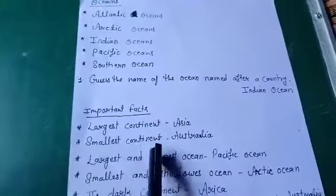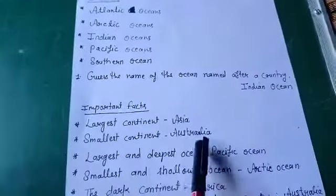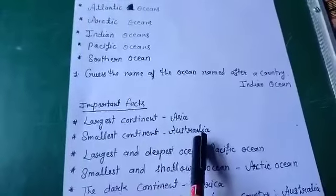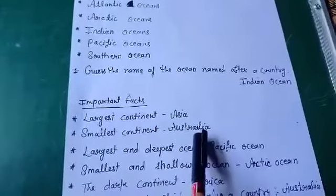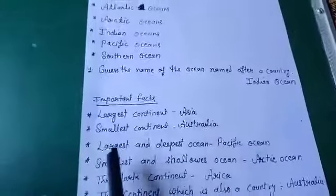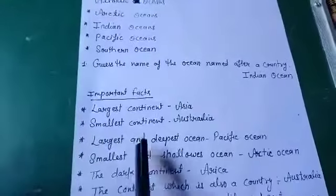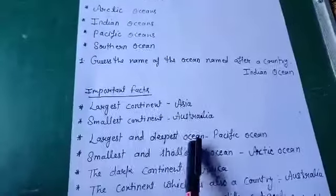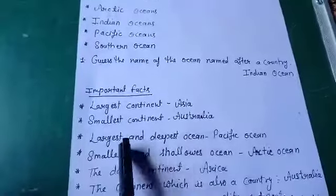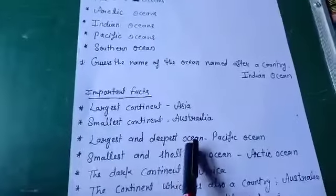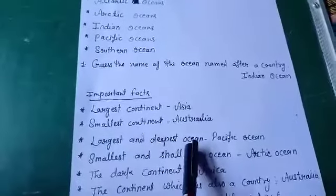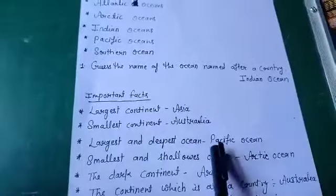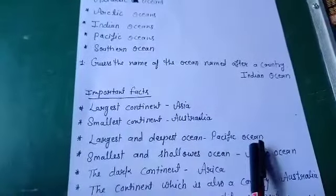Smallest continent — जो smallest continent है वो कौन सा है? Australia. Largest and deepest ocean — सबसे बड़ा और सबसे गहरा जो सागर है वो कौन सा है, बच्चों? Pacific Ocean.